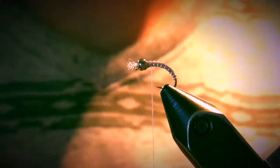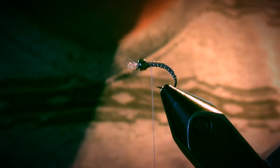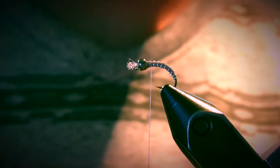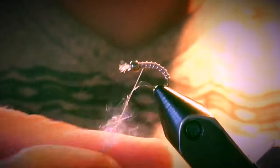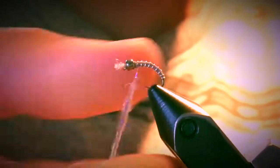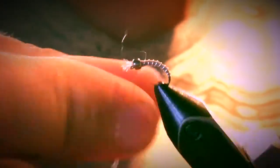Now I'm going to grab some ice dubbing. It's a mayfly color which is basically a light silver with purple and blue. It'll just look really good on this fly, and just a little bit of that.